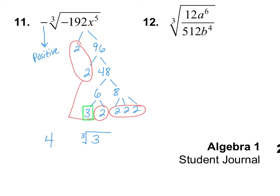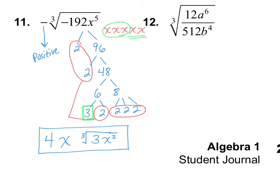Now let's take a look at the variables. The variable is x to the power of 5 — that's 5 x's. We're taking out groups of 3 this time. So we have one group of x's that we're going to take out. And notice that there are 2 that are left on the inside. So that means we are taking out 1x — I'll just put a single x here. And then on the inside, we have x squared. So this is the simplest way of writing number 11.